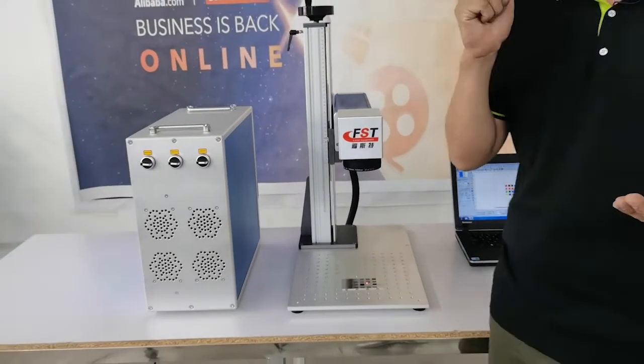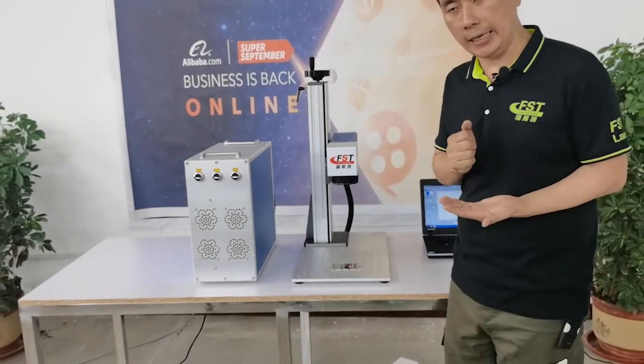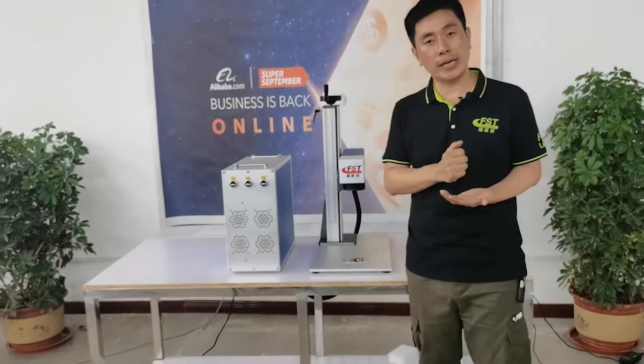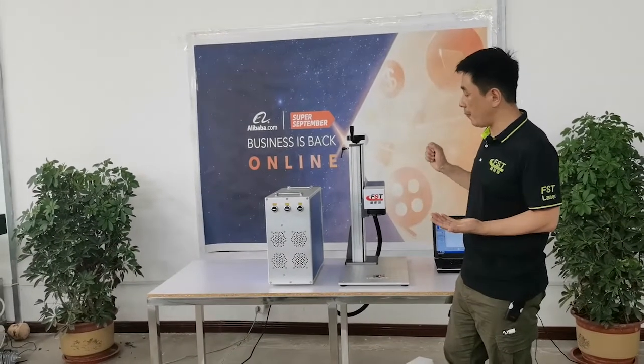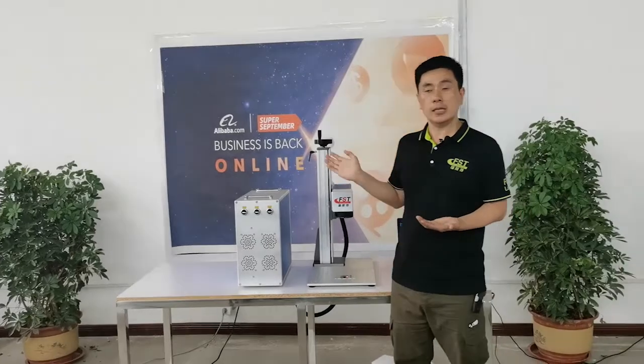They can mark a black color on white plastic. This is a very, very biggest advantage for this MOPA marking machine. It's a very big sale point.